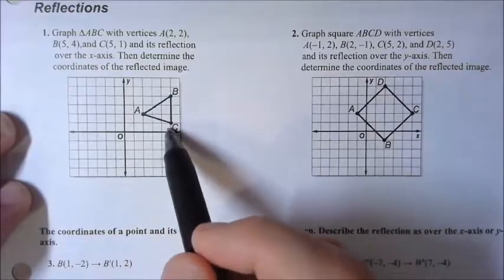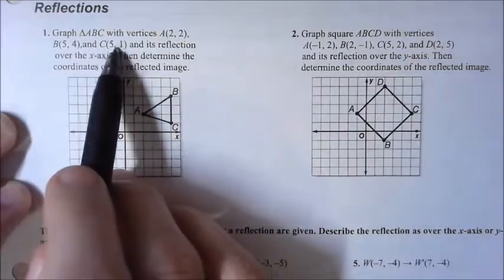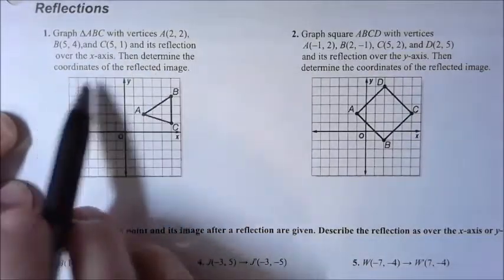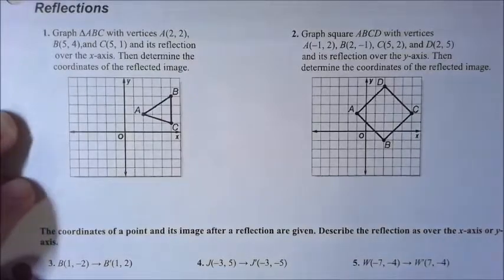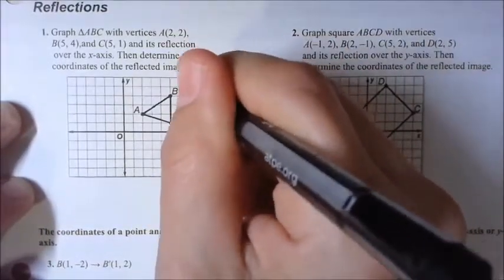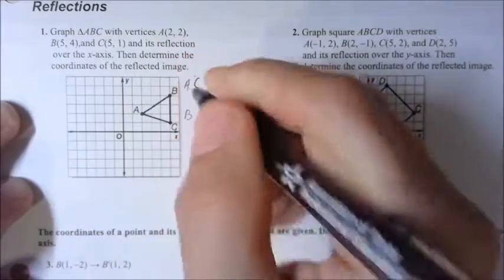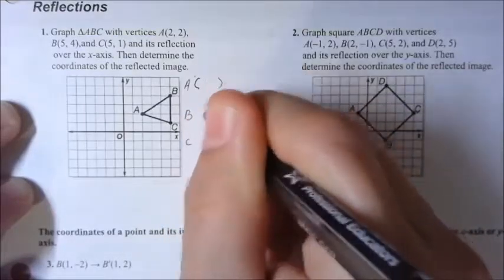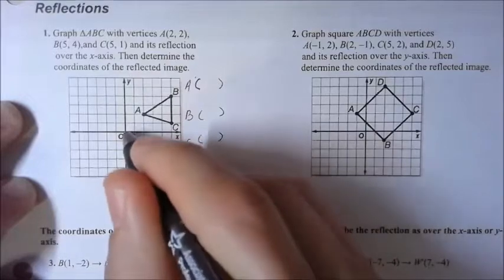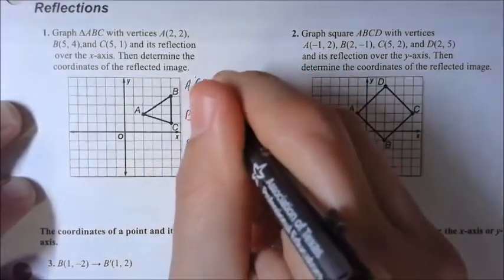Number one has already graphed our triangle, and it gives us the points right here at which it's been graphed. It says to determine the coordinates of the reflected image, so it wants us to list the coordinates. Let's list them for A, B, and C. A is going to be two, two — so we're over two, up two.